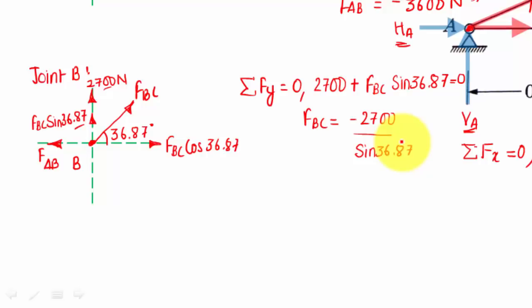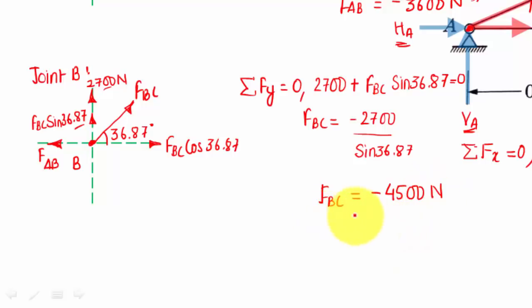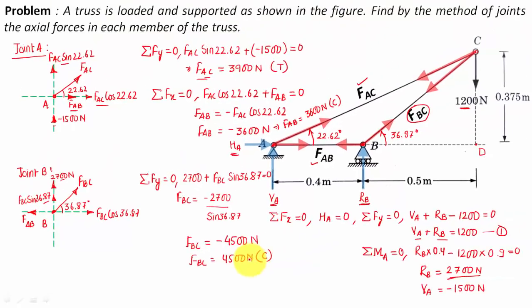Calculating 2700 divided by sin(36.87) gives approximately 4499.98, which we approximate to 4500. So FBC equals negative 4500 Newtons, or FBC equals 4500 N (C) — meaning the force in member BC is compressive in nature.